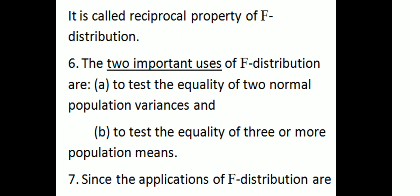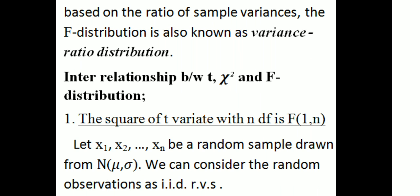If F follows F(n₁,n₂), then 1/F follows F(n₂,n₁) — this is called the reciprocal property of the F-distribution. The two important uses of the F-distribution are: (1) to test the equality of two normal population variances, and (2) to test the equality of three or more population means. Since F-distribution is based on the ratio of sample variances, it is also known as the variance ratio distribution.